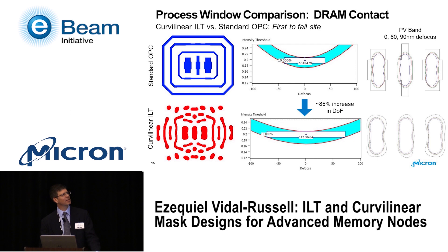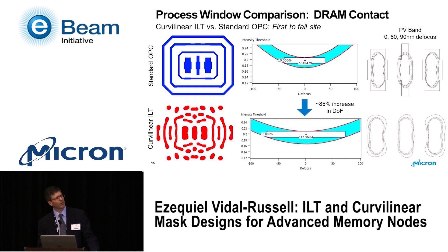Comparing the two cases: the top row shows the conventional OPC solution with conventional assist features; the bottom shows fully unconstrained curvilinear ILT. In simulation we're gaining about 85% increase in depth of focus, and the PV band is also much tighter in the fully curvilinear case. The outer contour visible in the image is the mask shape overlaid — rectilinear for conventional OPC, fully curvilinear for ILT — not part of the PV band.